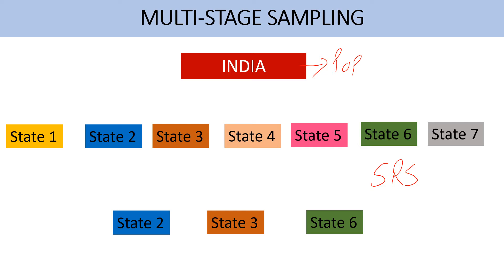State 2, State 3, and State 6. If it is feasible for me to collect data from all the teacher educators across these three states — State 2, State 3, and State 6 — then it will be simply cluster sampling. But again it is not feasible for me to collect data from all the teacher educators across these three states. That means I need to further divide these clusters into sub-clusters.